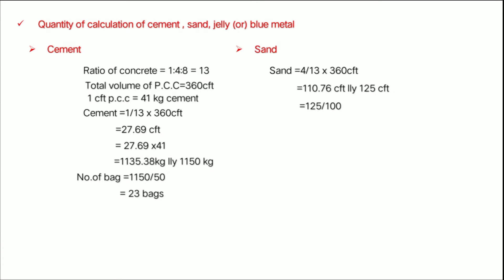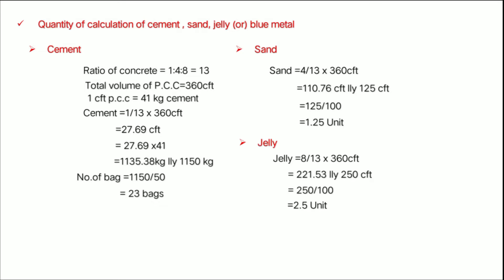The number of cement bags is 17 to about 23 bags. The next calculation is for jelly. For jelly the ratio is 4:8 and 8:8 giving 8 by 13. The result is 2.5 units of jelly — that is 2.5 units of jelly.